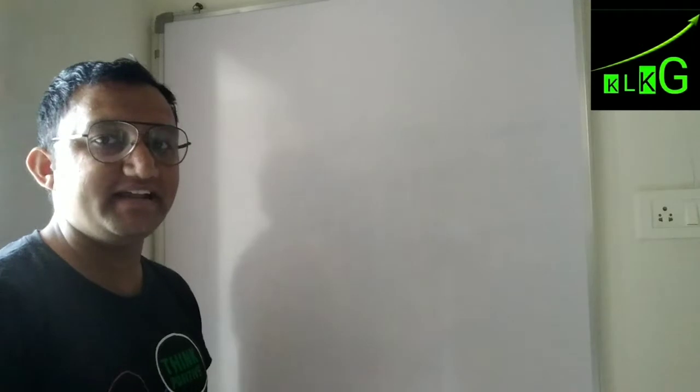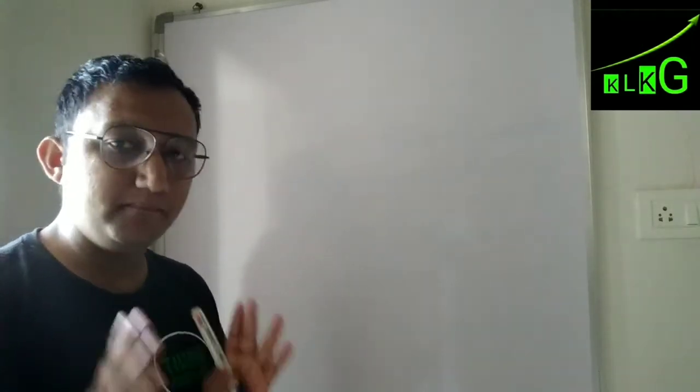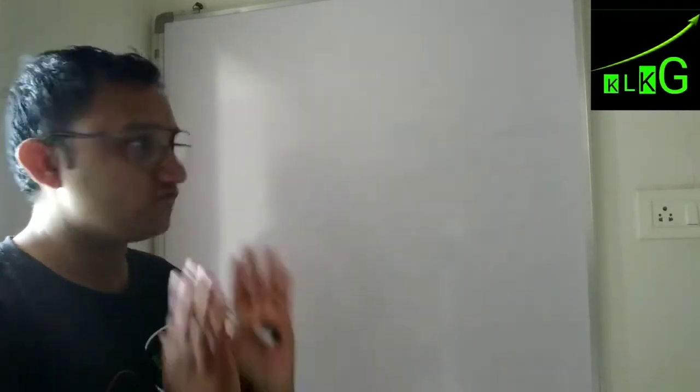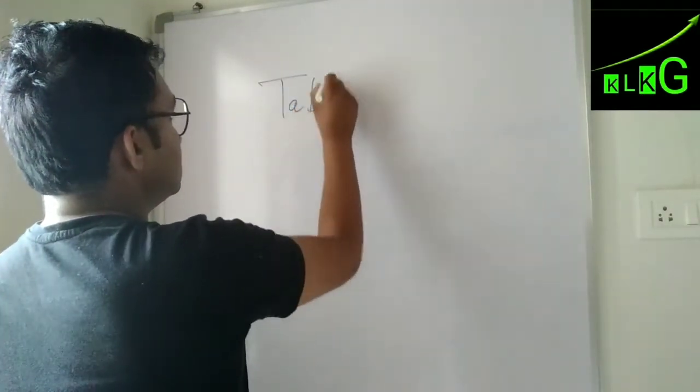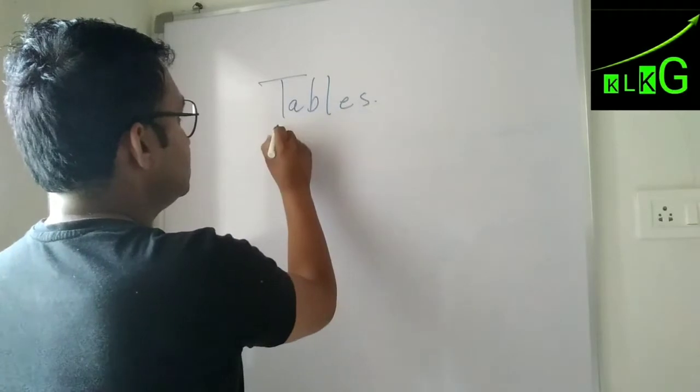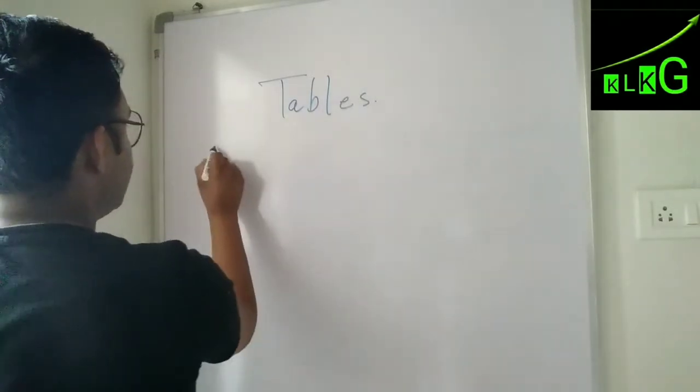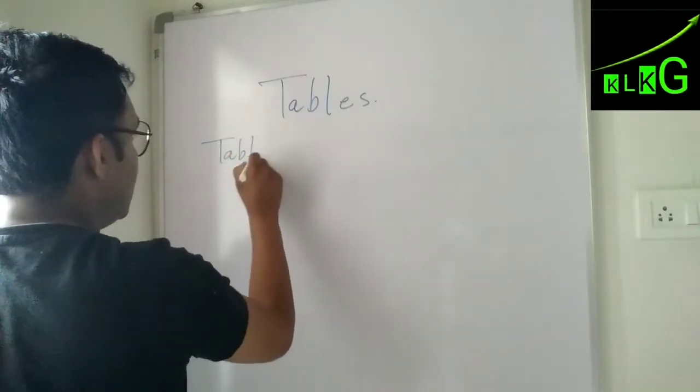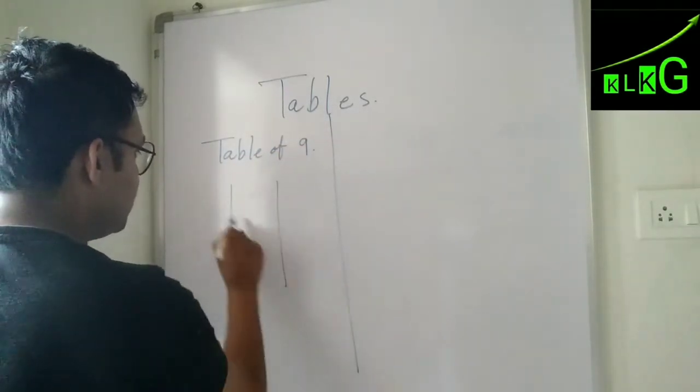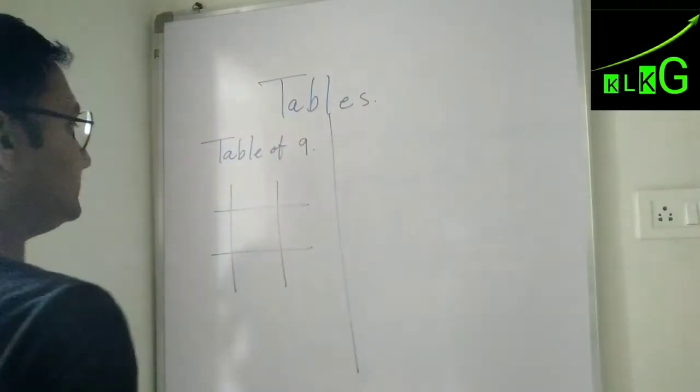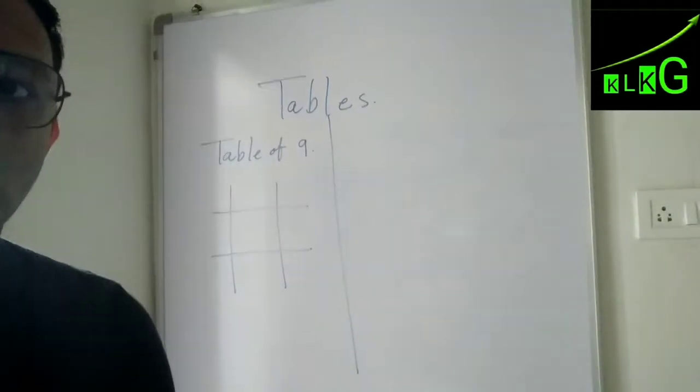So the trick to make tables of 9, 19, 29, and so on—39, 49—is basically the same. What you have to apply to your tables: First we will start with the table of 9. First you will make lines like this.